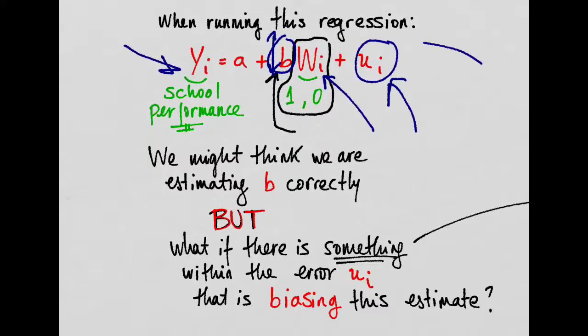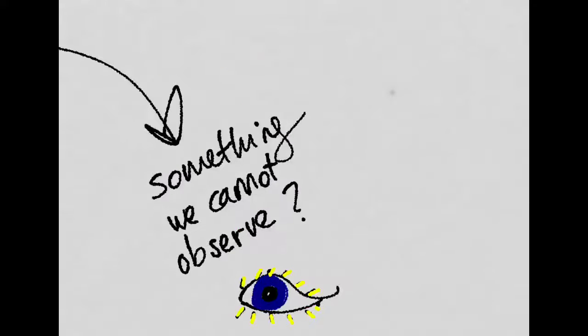And thus, we are thinking that having the infection yields an effect in school performance that, in reality, is not true. Because there is something else affecting the outcome when the individual has the infection. So we already said that there is something that is within the error, we cannot observe it. But what is it?